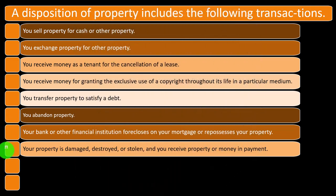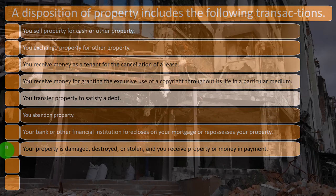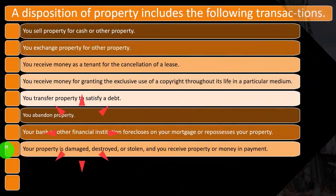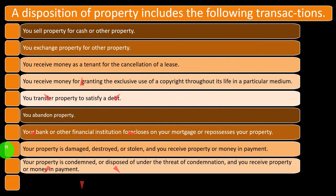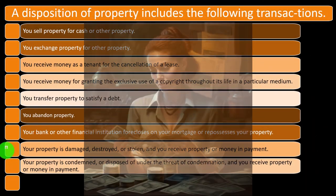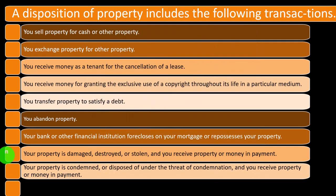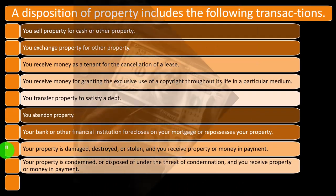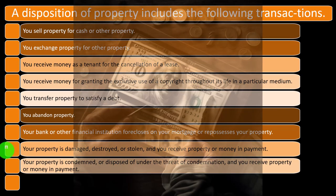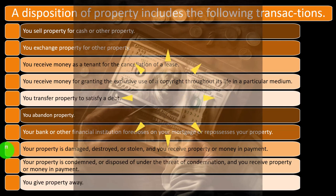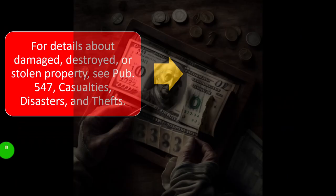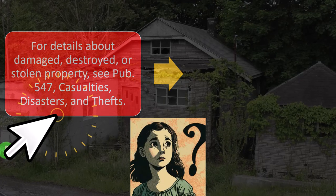Your property is damaged, destroyed, or stolen and you receive property or money in payment — again, most likely involuntary. Your property is condemned or disposed of under the threat of condemnation and you receive property or money in payment. For details about damaged, destroyed, or stolen property, see Publication 547, Casualties, Disasters and Thefts.